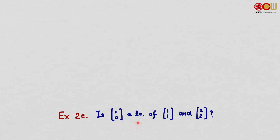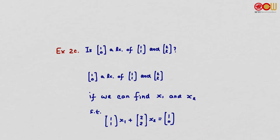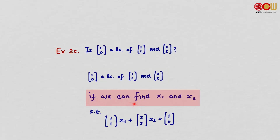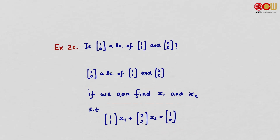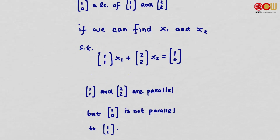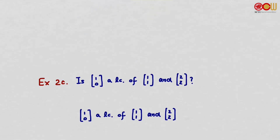Now, is (1, 0) a linear combination of two other parallel vectors — say (0, 2) and (0, 3)? Again, we ask whether scalars x1 and x2 exist such that the equation has a solution. These two vectors are parallel, but (1, 0) is not parallel to either of them. So the answer is no — (1, 0) is not a linear combination of these vectors.